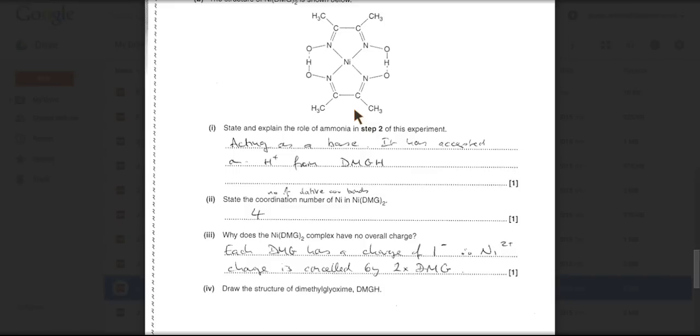Why does NIDMG twice have no overall charge? Well nickel we know is plus 2. So each DMG must be 1 minus. And therefore the charges cancel.